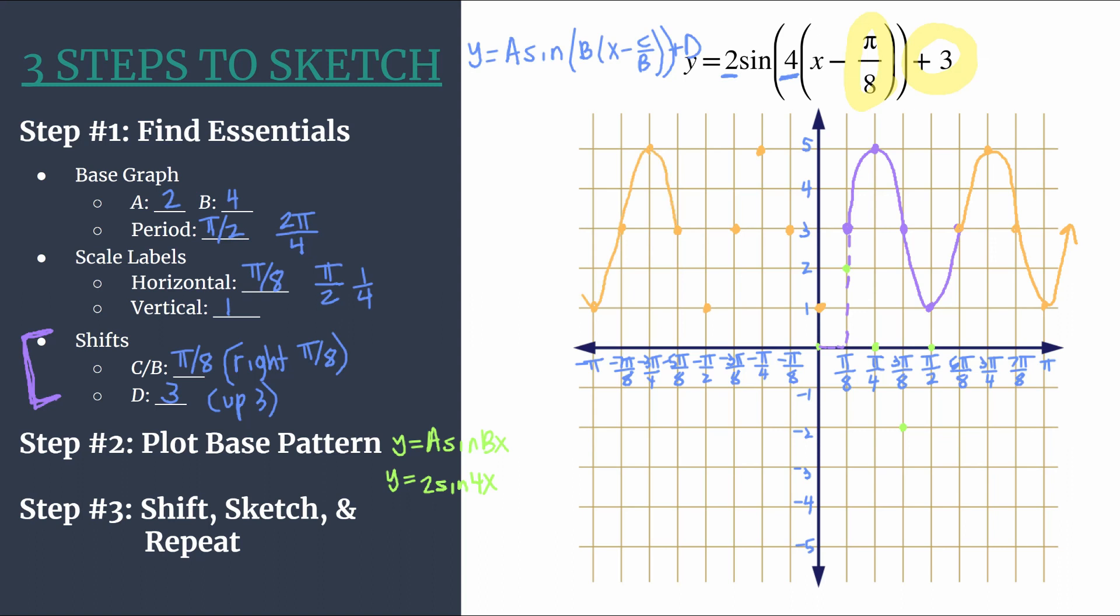You can really nicely see the amplitude stayed the same here. It's still 2. You can see that midline here. What were x-intercepts got shifted up by 3 units. So our new midline is y equals 3.